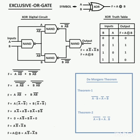Hello. The exclusive OR gate is a very important gate. The digital circuit for the exclusive OR gate is given using NAND gates. The symbol is also given, and the equation for the exclusive OR gate is solved here using De Morgan's theorem: F equals A multiplied by complement of B, plus complement of A multiplied by B.